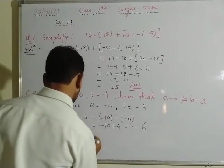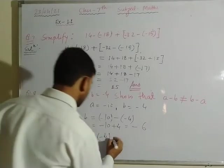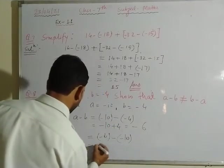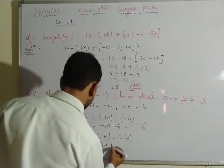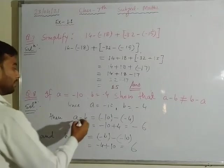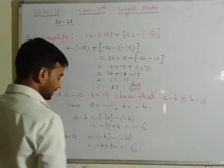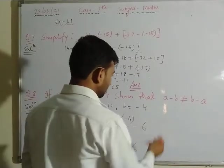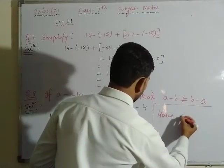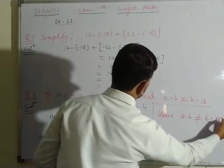And b minus a: put b's value as minus 4, minus a's value which is minus 10. So minus 4 minus minus 10 becomes minus 4 plus 10, which equals plus 6. So a minus b equals minus 6 and b minus a equals plus 6. Hence a minus b is not equal to b minus a. Proved.